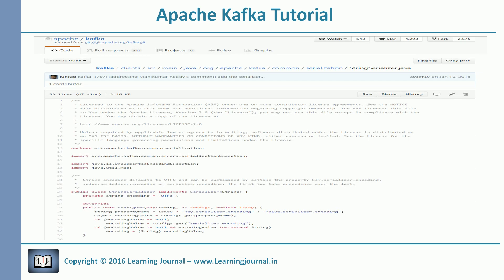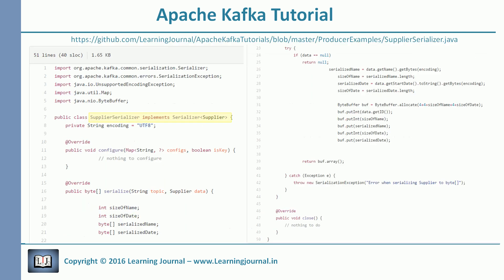Next is the serializer class. We already know that there is a string serializer. Sometimes it is a good idea to copy the existing source code and modify it according to your requirement. So I took this code and modified it for my example. The name of my class is SupplierSerializer and it implements the Serializer interface and also sets the generic type as Supplier. This interface is defined under the kafka.common package. As per this interface, we need to override three methods: configure method, serialize method, and close method.